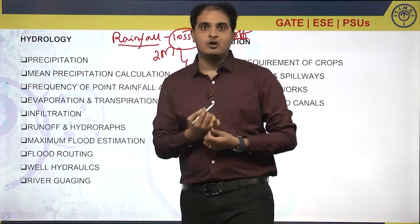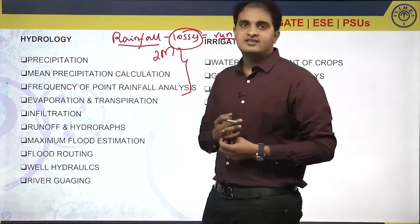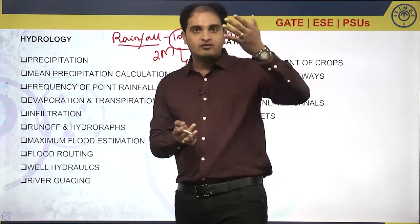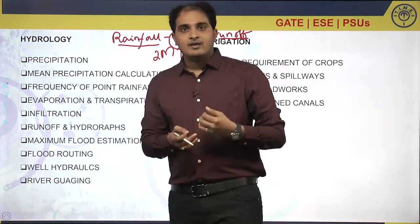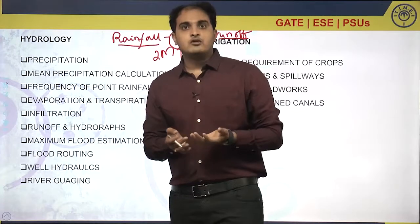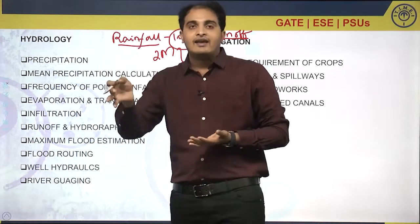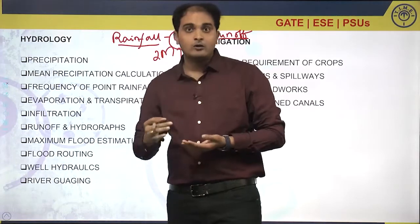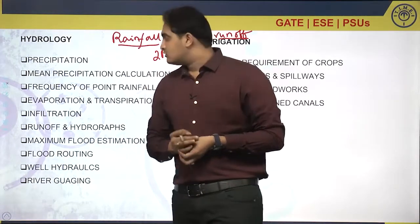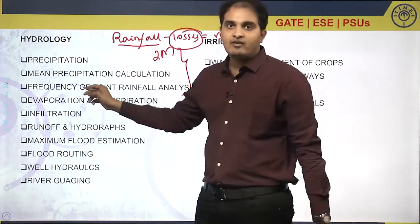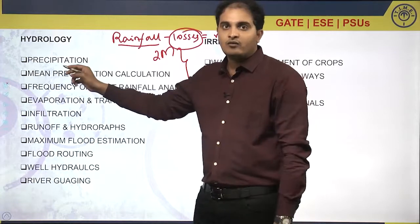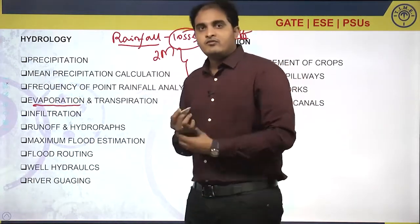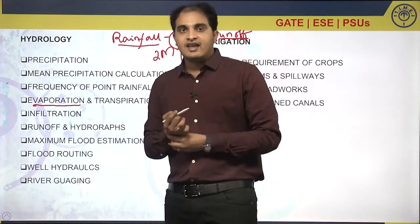After interception loss, we have evaporation loss. Once rainfall reaches the surface, some portion of water gets evaporated. The evaporated water then returns in the form of rainfall onto the earth — that means it is a cycle. The rainwater which is evaporated is called evaporation.